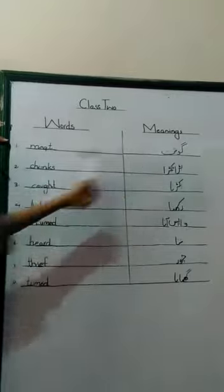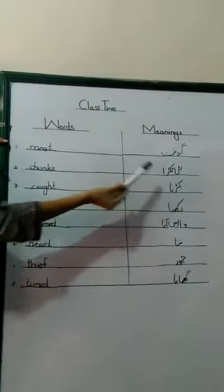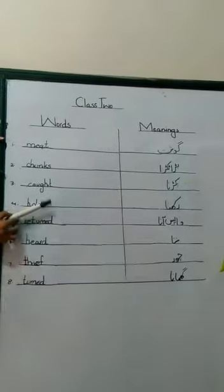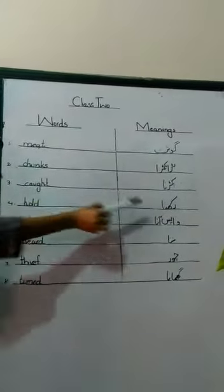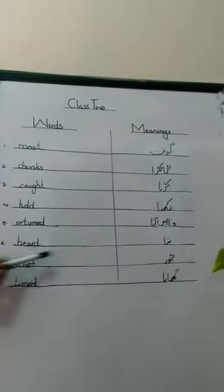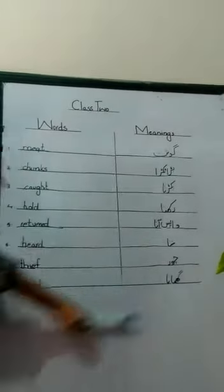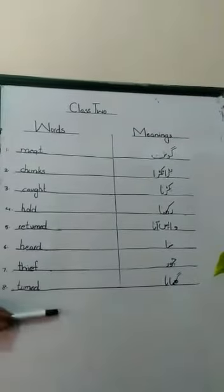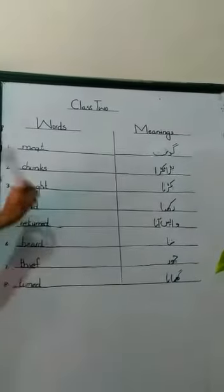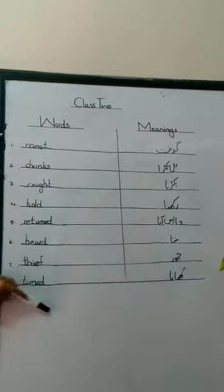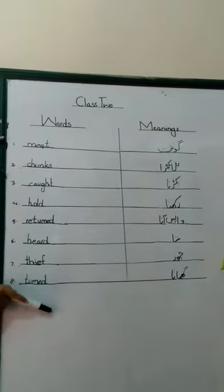Let me repeat: meat means gosht, chunks means bhaatukra, caught means pakarna, hold means rakhna, returned means waapis aana, heard means sunna, thief means chor, turned means ghumana. Okay students, you have to do this work and you can send it to me. Thank you.